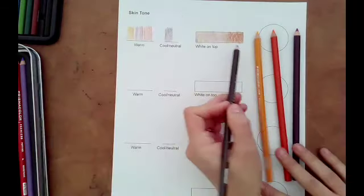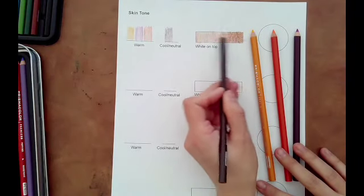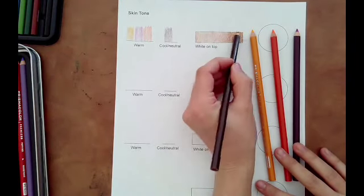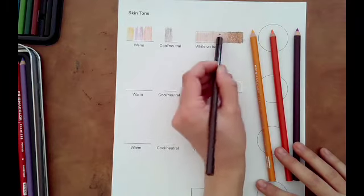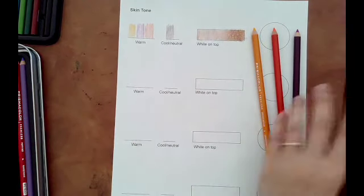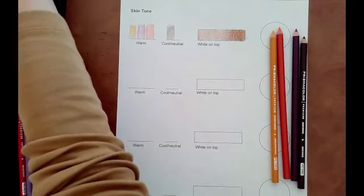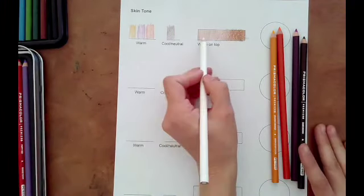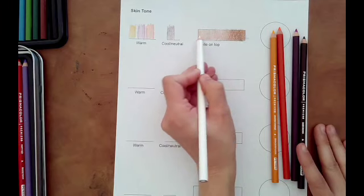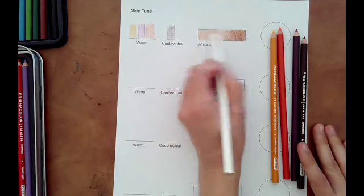Remember to hold your color pencil far back and use the side of the pencil to make even layers. Next I'm going to take my white color pencil and put it on top of everything. It's not so much to make things lighter but it's more about getting rid of my pencil strokes and making everything smooth.